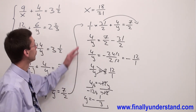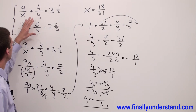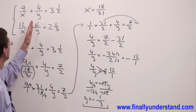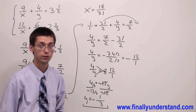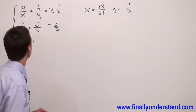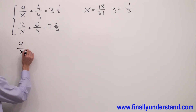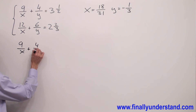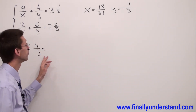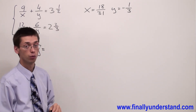To verify that our values of x and y are correct, we substitute x and y into the original equations and confirm the left side equals the right side. Let's verify — starting with the first equation: 9 over x plus 4 over y. Replacing x with 18 over 31 and y with negative 1 third, we should obtain 3 and 1 half.